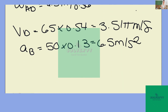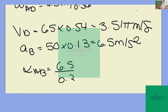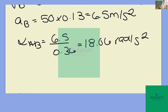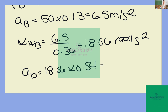Then we want to calculate the angular acceleration at link AB. This is going to be 6.5 divided by 0.36, which will give us 18.06 radians per second squared. And then lastly, we want to calculate the acceleration at D. This is going to be 18.06 times 0.54, which is 9.75 meters per second squared.